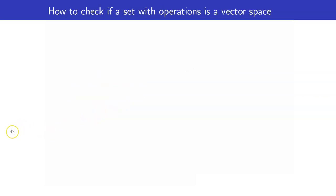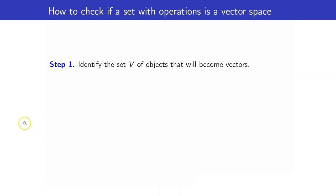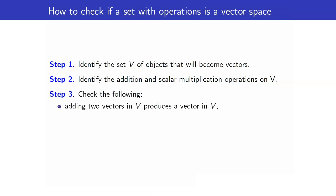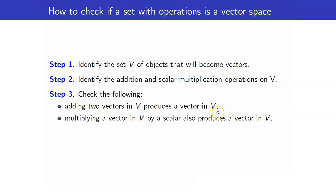How do we check if a set with operations is a vector space? First, identify the set V of objects that will become vectors. Second, identify the addition and scalar multiplication operations in V. Third — and most importantly — check that V is closed under addition and scalar multiplication. Once you check these two closure properties, you may proceed to check the other axioms. The other properties would not make sense if closure is not satisfied first.